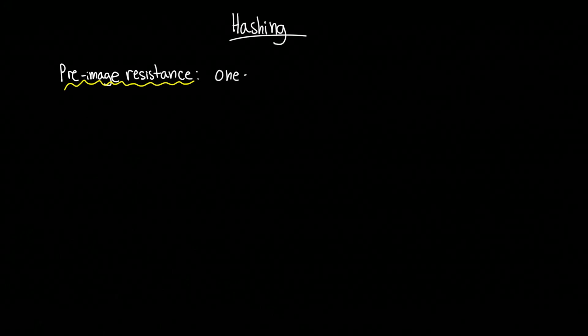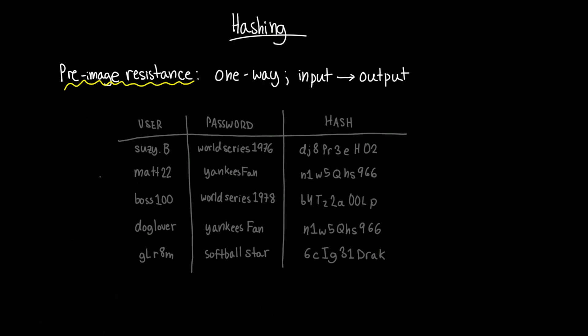This is significantly more secure than storing plain text or encrypted passwords because hash functions have something called pre-image resistance, which basically means that it's extremely difficult to discover the input based solely on the output of a hash function. Even making the smallest change to an input completely changes the resulting string. In our case, it is nearly impossible to find the actual password which produces a hash stored in our database.